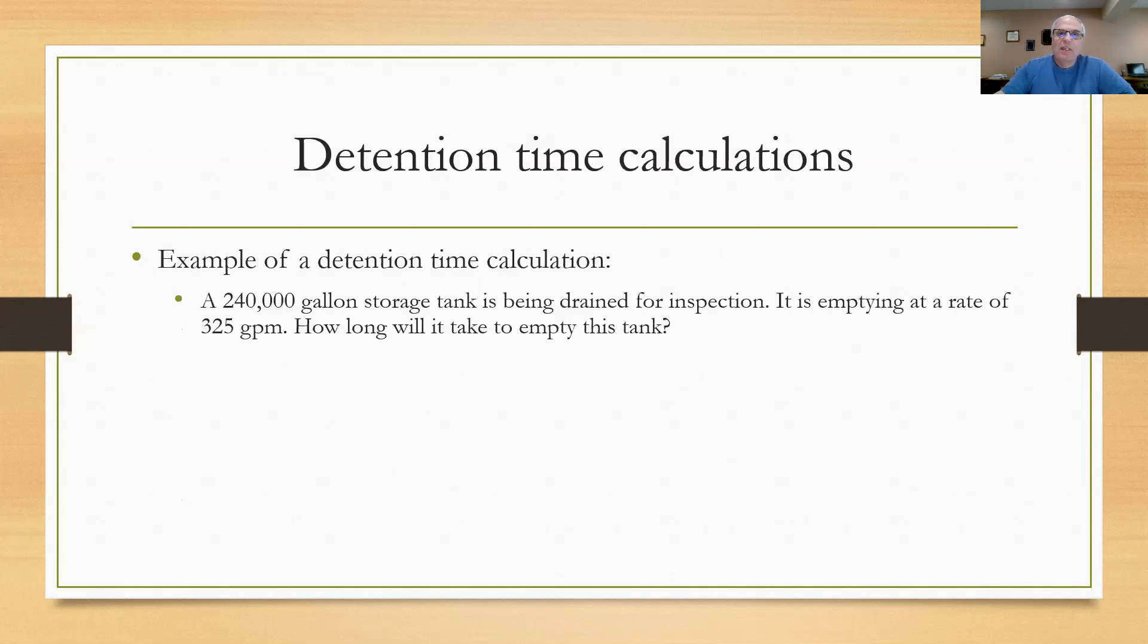Here's an example calculation for detention time. They're telling us that we've got a 240,000 gallon storage tank. We're gonna drain it for inspection. We're emptying it at a rate of 325 gallons per minute. We need to know how long it's gonna take to empty that tank at that rate of flow, because we need to know whether we need to stick with it because it's gonna empty quickly or it's gonna take a long time.